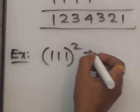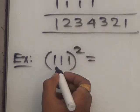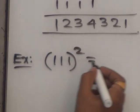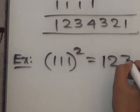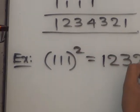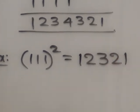111² — one jayasthunna start: one, two, three, two, one. Answer is 12321.